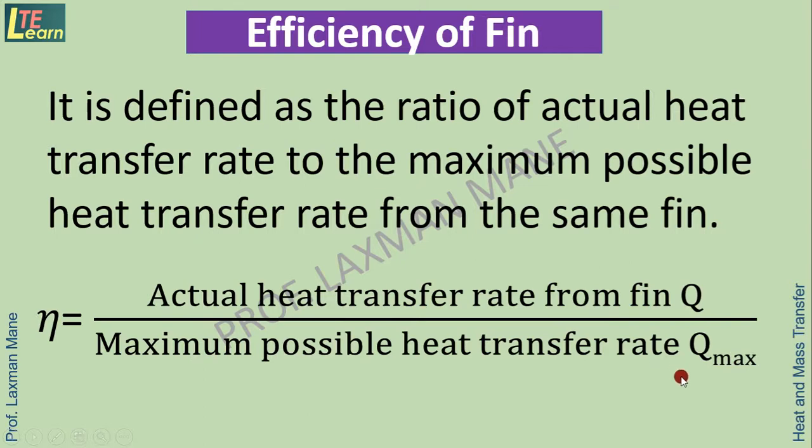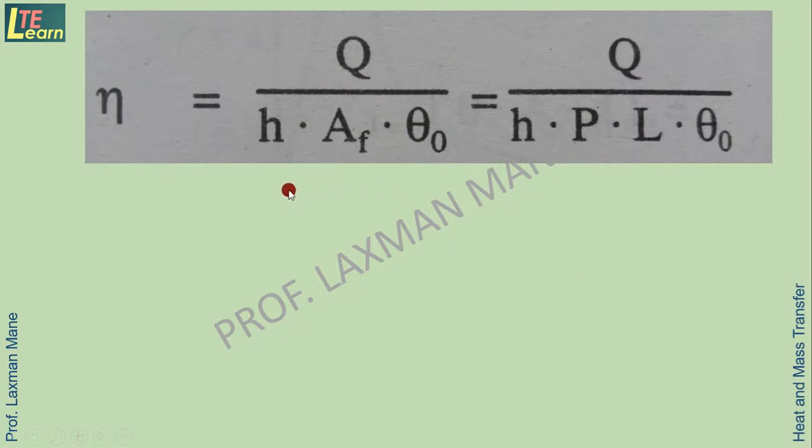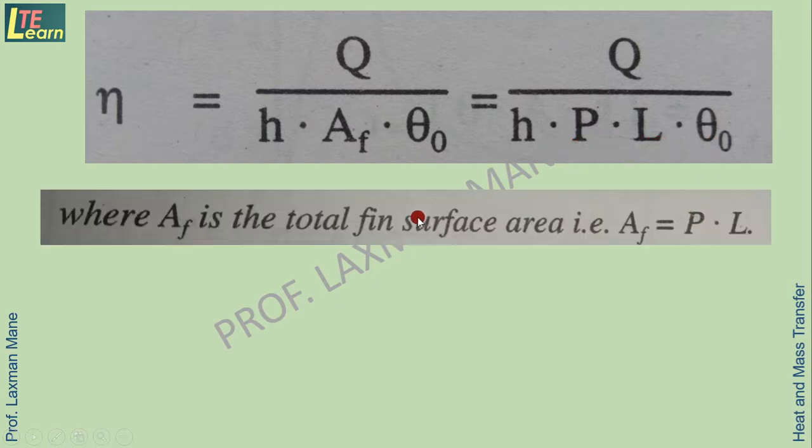Let us see the terms elaboration. So here η equals Q upon maximum heat transfer rate which is h·A_f·θ_0 equals h·P·L·θ_0. Here A_f is the total fin surface area that is product of P into L. P is perimeter and L is length of fin.